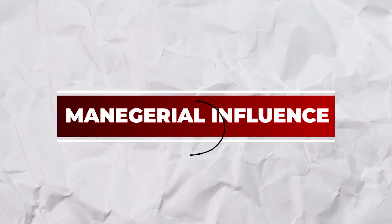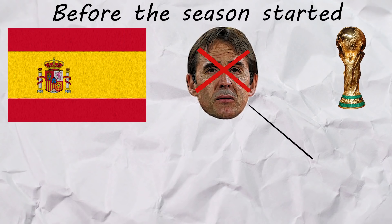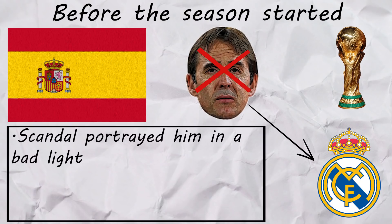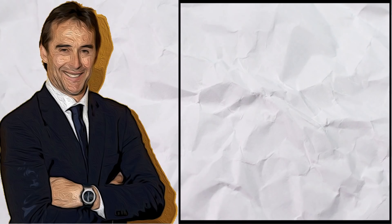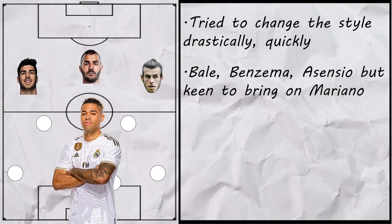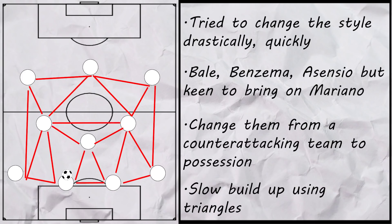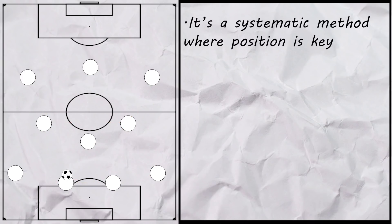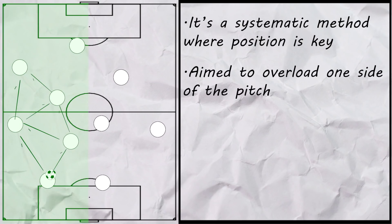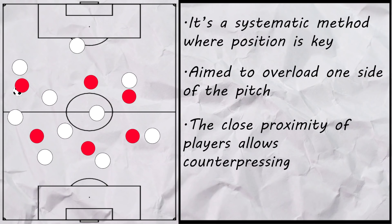One factor which would influence how these players performed is the managerial style. Madrid went through three managers, so we'll briefly take a look at the tactics of each. Before the season even started, Madrid were off to a bad start, with Lopetegui being sacked on the eve of a World Cup for taking the Madrid job during competition preps. Such an exit put him on the back foot in the media as well as in the dressing room. Tactically, Lopetegui tried to make drastic style changes very quickly. He used a 4-3-3 with the front three of Benzema, Asensio and Bale, but was always keen to bring on Mariano. Much like his Spain side, Lopetegui wanted to turn a Madrid side who had spent the majority of the last decade as a counter-attacking side into a possession team. He wanted slow build-up play where triangles were formed around the pitch to give the team options — a fairly rigid system, but one that could work well when a team is used to the style. He would overload one side of the pitch, trying to create passing angles, but always kept a man wide in case they needed to switch. When functioning well, keeping players in close proximity means an easy press if they do lose the ball.